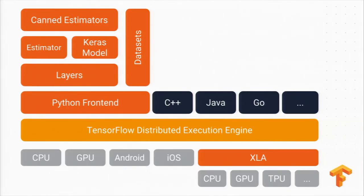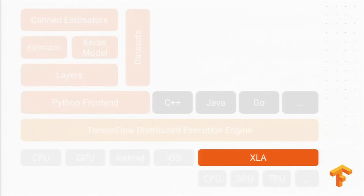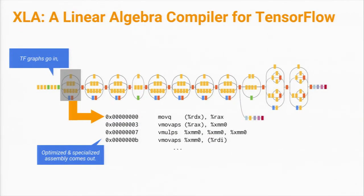I'll comment briefly on some of the lessons we've learned about end-to-end system optimization to take full advantage of these supercomputers. Here's a diagram with XLA — the linear algebra compiler — in the lower right, and data sets in the upper left. In order to generate machine code for these TPUs from TensorFlow, we've had to build a whole compiler framework that's able to target CPUs, GPUs, and TPUs, and we also encourage external companies developing their own ASICs to use XLA to talk to those ASICs.